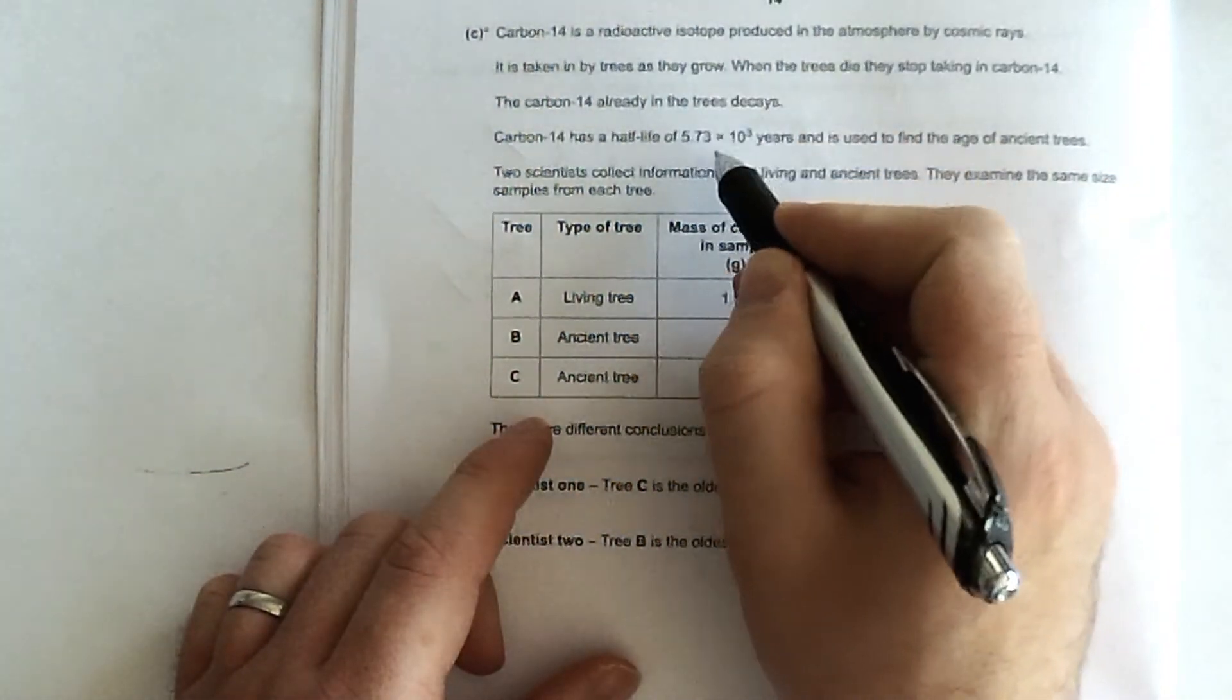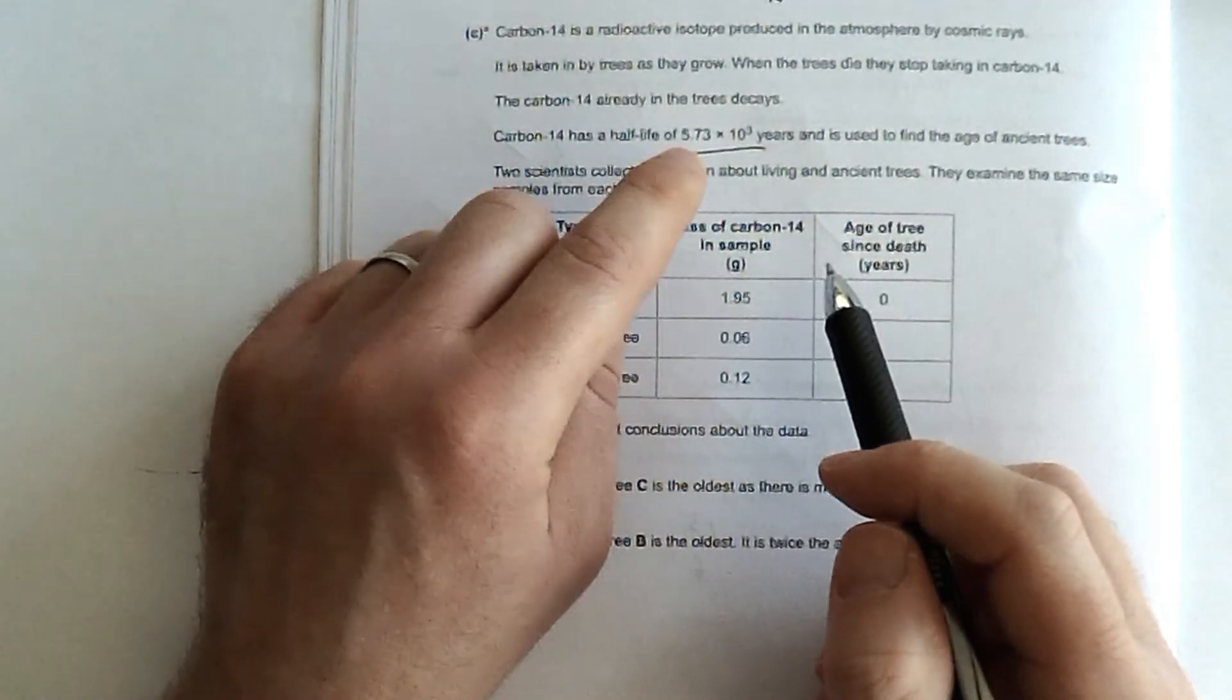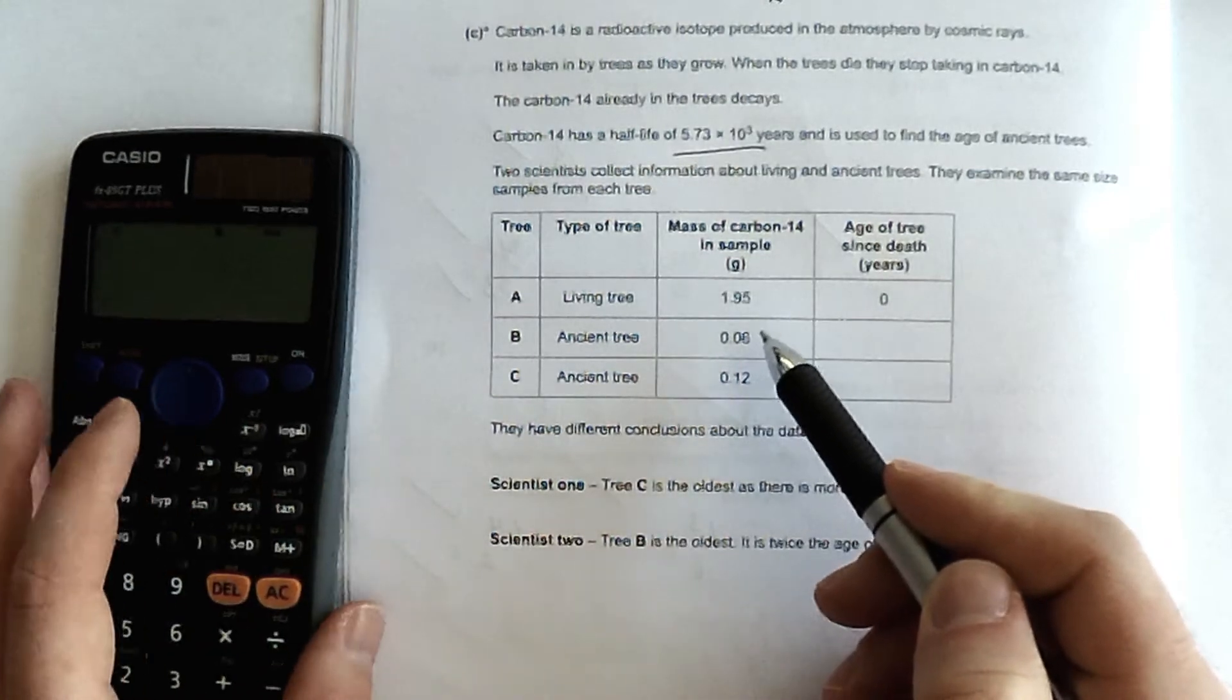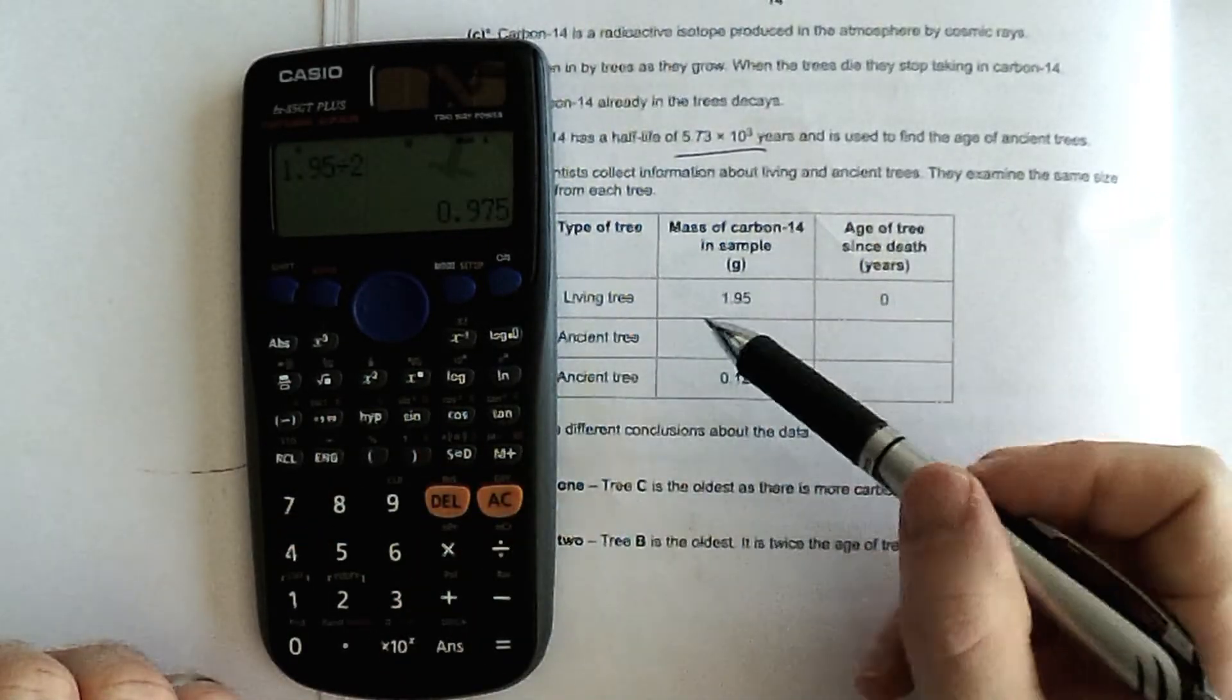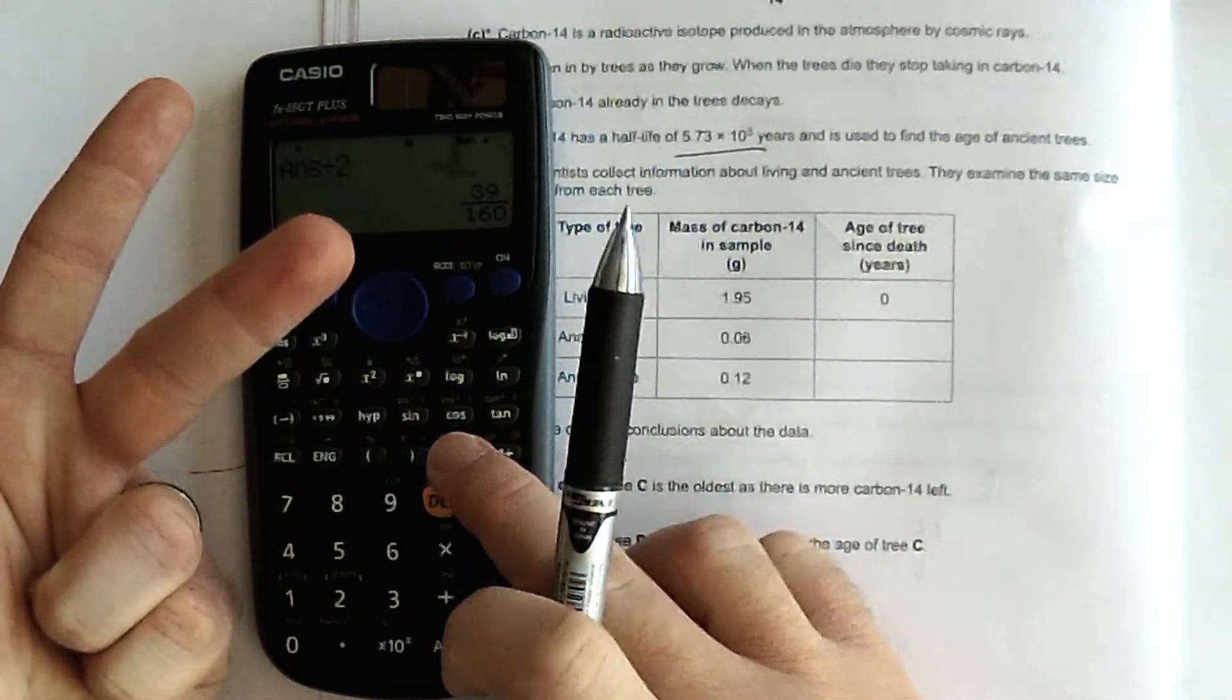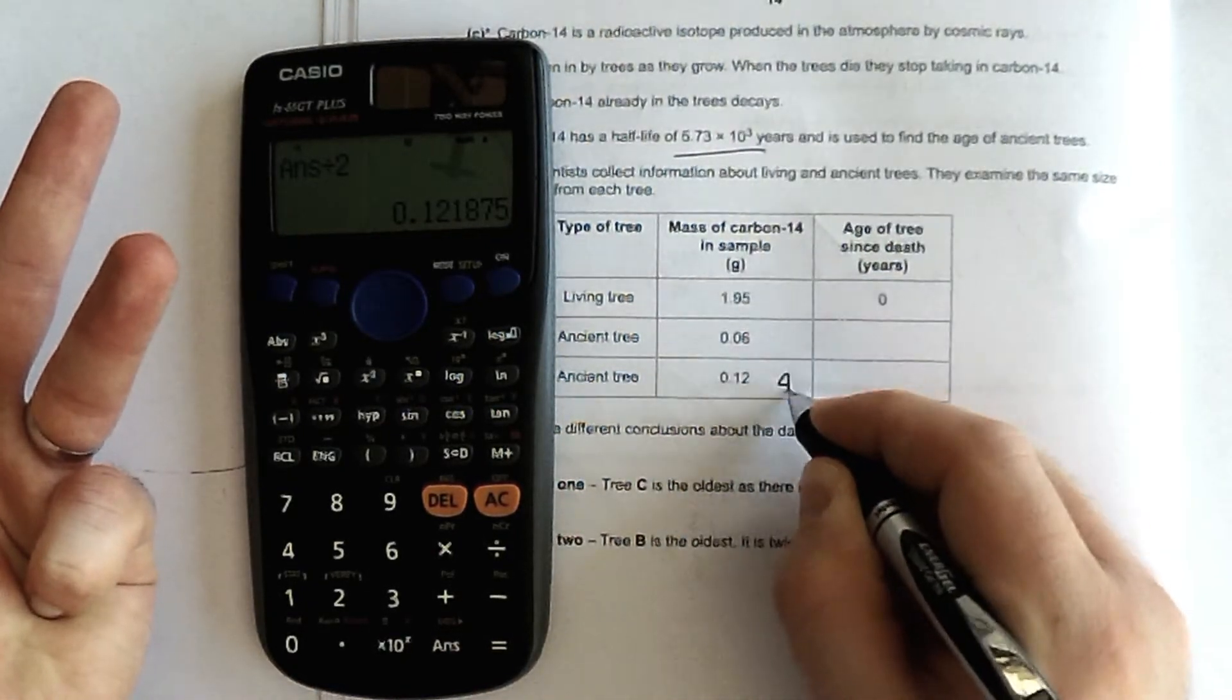So let's have a little go at this. So that's the half-life, that many years. I need to work out how many half-lives have passed since it was alive, since the tree was alive. So the half-life is the time taken for the mass of a certain sample to half. So how many times has it halved to get to this and then to get to this? So in my calculator, I'm just going to do 1.95 divided by 2. So what's half of it? That's the first half-life. Is it either of these? No. Divide it by 2 again. That's the second half-life has passed. Is it either of these? No, not quite. Divide it by 2 again. That's the third half-life. Is it either of these? No. So divide it by 2 one more time. That's the fourth half-life. Aha, that's basically that to two significant figures anyway. So this is four half-lives have passed.